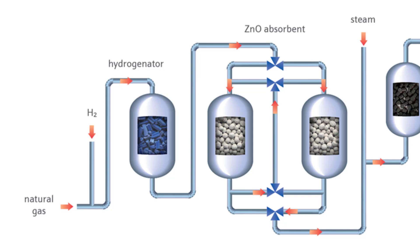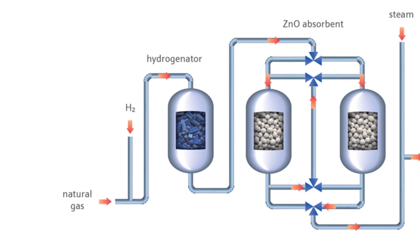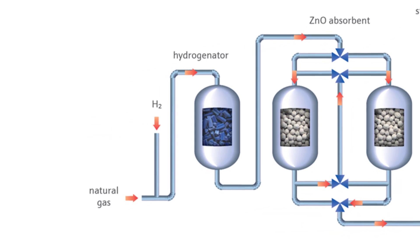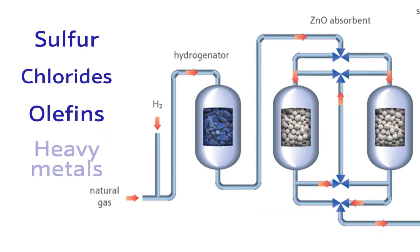Some common contaminants that may be found in the feed stream include organic and inorganic sulfur and chlorides, olefins, and possibly heavy metals such as arsenic, vanadium, lead, or mercury.